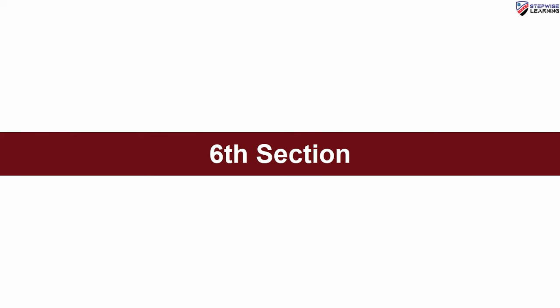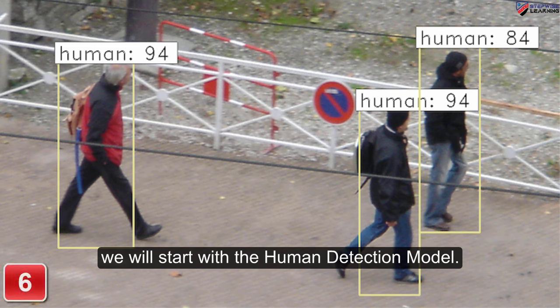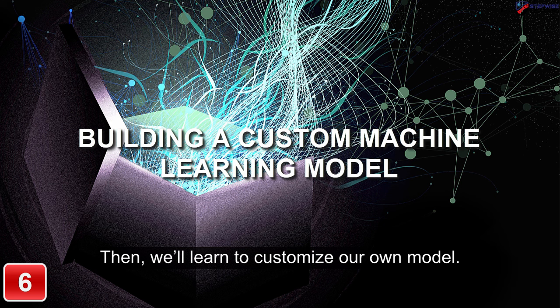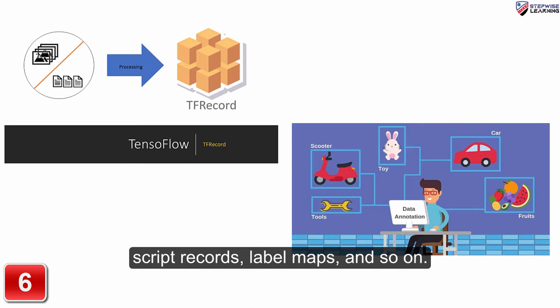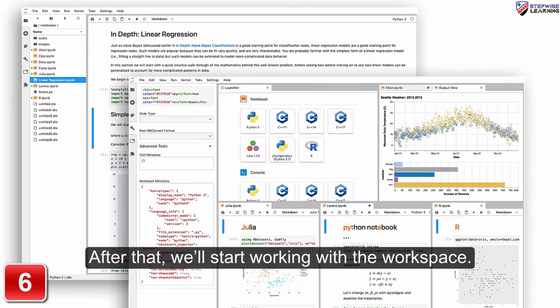In the sixth section, we will start with the Human Detection Model. Then we will learn to customize our own model. Thereafter, we will proceed with pre-trained models, script records, label maps and so on. After that, we will start working with the workspace.